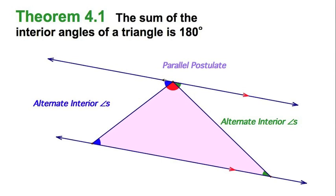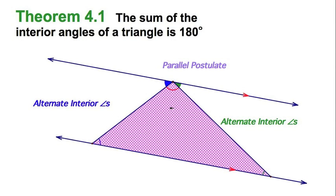On the top, I've got one red, green, one blue. Makes a straight angle, 180. By substitution for the triangle, one red, one green, one blue. Also makes 180.